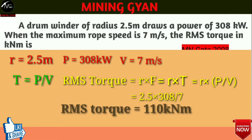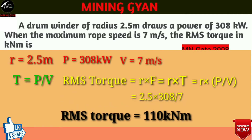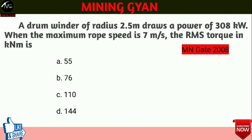जब आप इसको solve करेंगे तो answer आएगा 110 kNm। So the right answer is option C — RMS torque is 110 kNm.